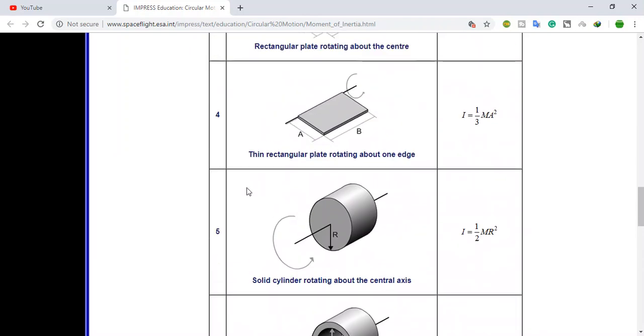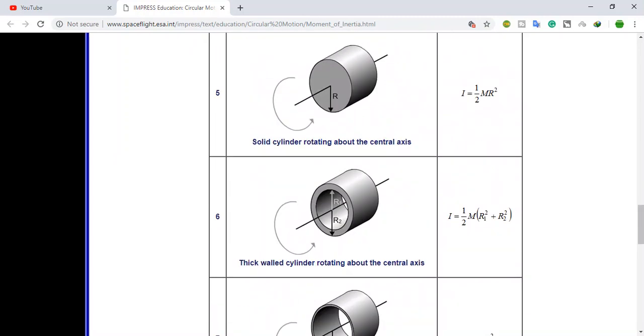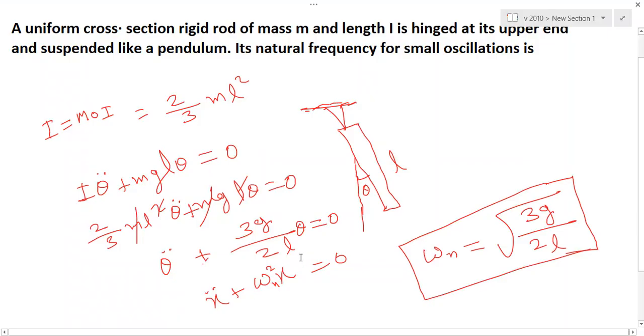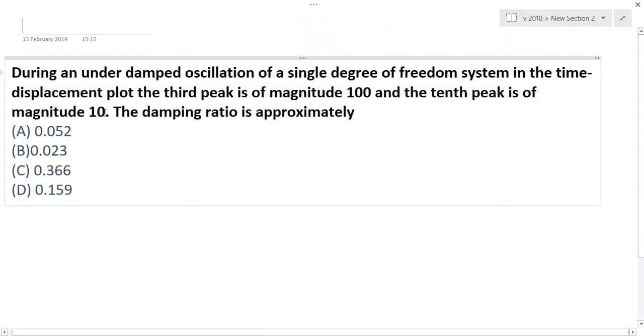Next, move to the second question. Second question is: during an under-damped oscillation of a single degree of freedom system, in the time displacement plot, the third peak is of magnitude 100 and the tenth peak is of magnitude 10. Just see here - third peak and here is tenth peak, that is 10 minus 3, that is 3 equals 7. Here magnitude is 100 and 10 is given. The damping ratio, so as we know that...